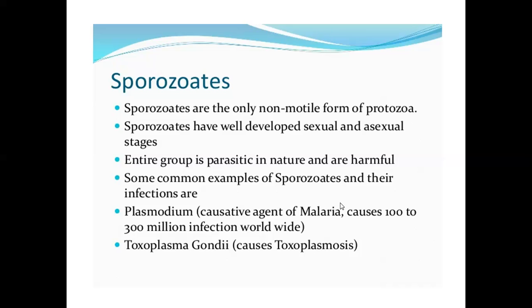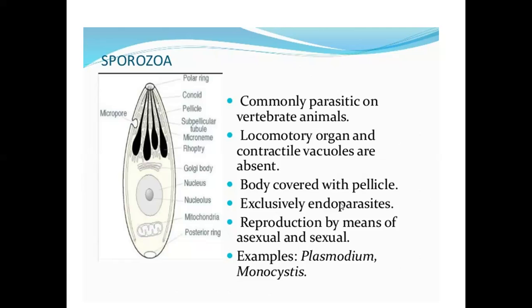Entamoeba is parasitic in humans and causes intestinal disease. Sporozoans: sporozoans are the only non-motile form of protozoa. Sporozoans have well-built sexual and asexual stages; the entire group is parasitic in nature. Common examples of sporozoans and their infections: Plasmodium — causative agent of malaria, causing 100 to 300 million infections worldwide; Toxoplasma gondii — causes toxoplasmosis. Locomotory organs and contractile vacuoles are absent; body covered with pellicle; exclusively endoparasites.